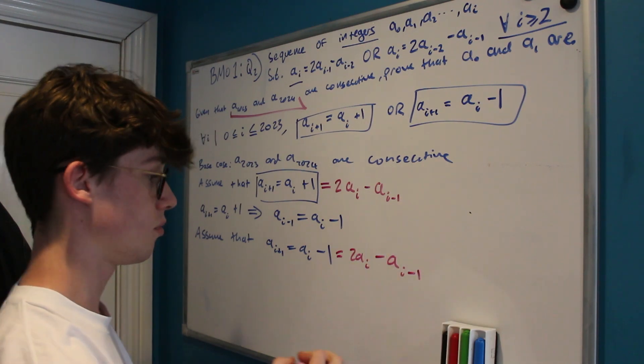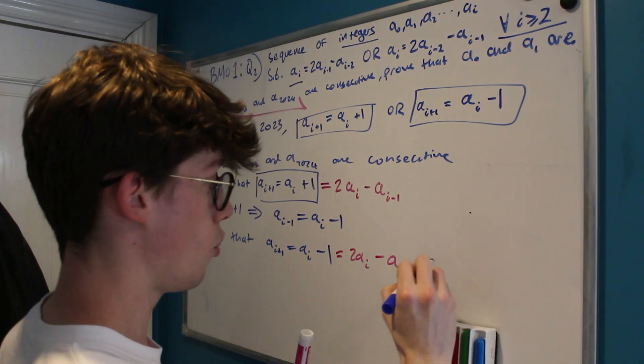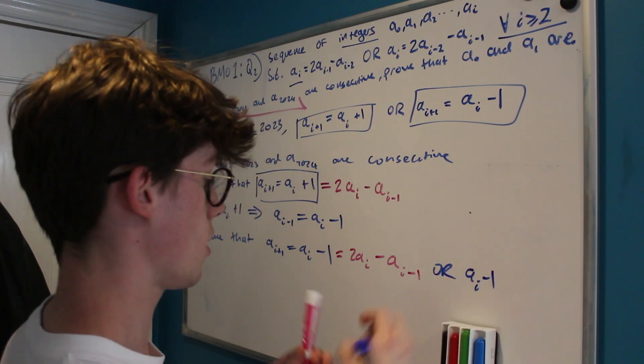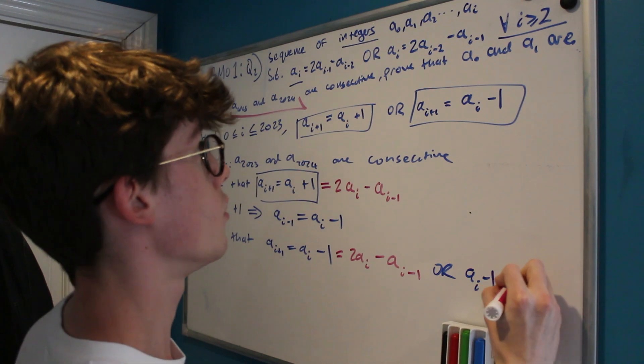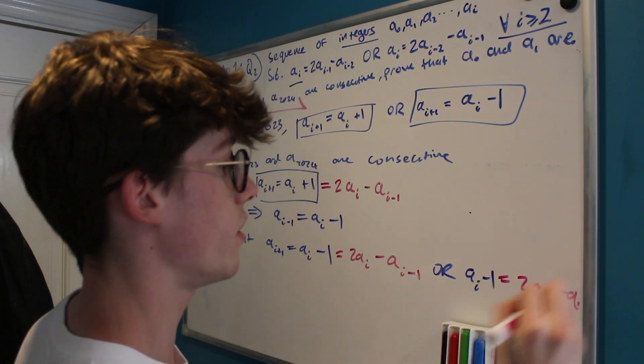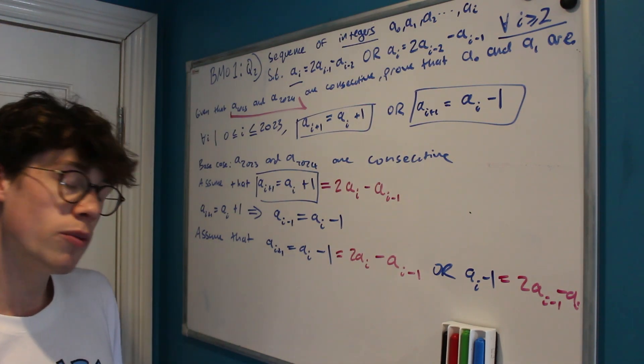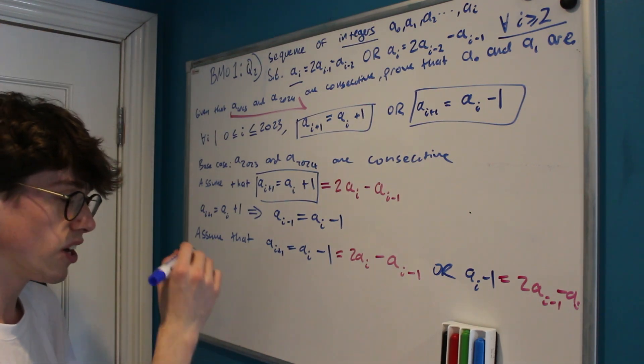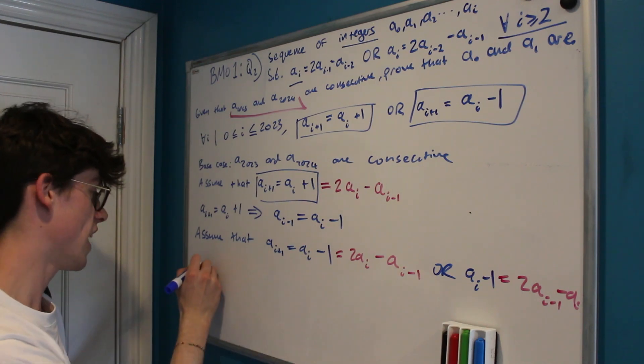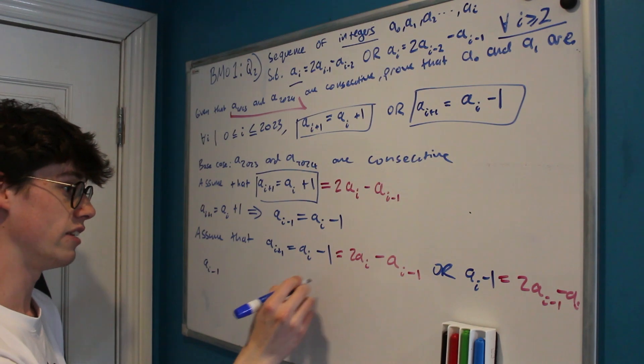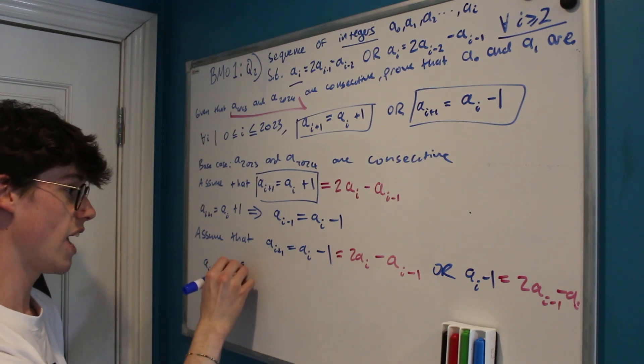And so what would this imply for us? Well it would either be equal to again 2ai minus ai minus 1, or it would be equal to 2 times ai minus 1 minus ai. And again you may not even have to work this through because it might seem obvious what's coming next here.